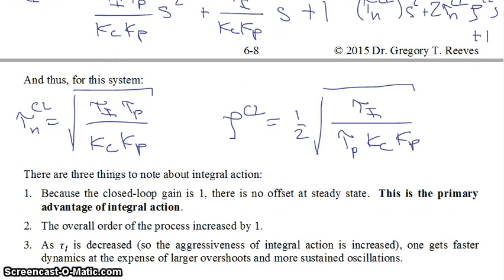The other thing to note is that as tau i is decreased—that is, the aggressiveness of integral action is increased—one gets faster dynamics at the expense of larger overshoots and more sustained oscillations. In other words, as we decrease this number here, zeta also becomes smaller, so you have faster dynamics, but you also start to get worse and worse oscillations.